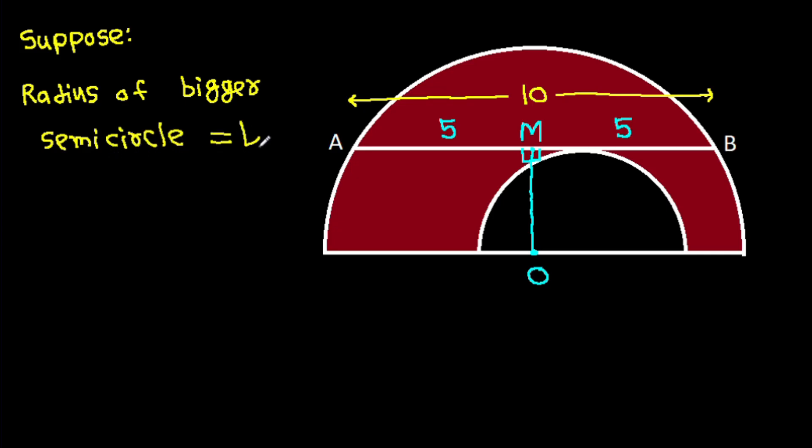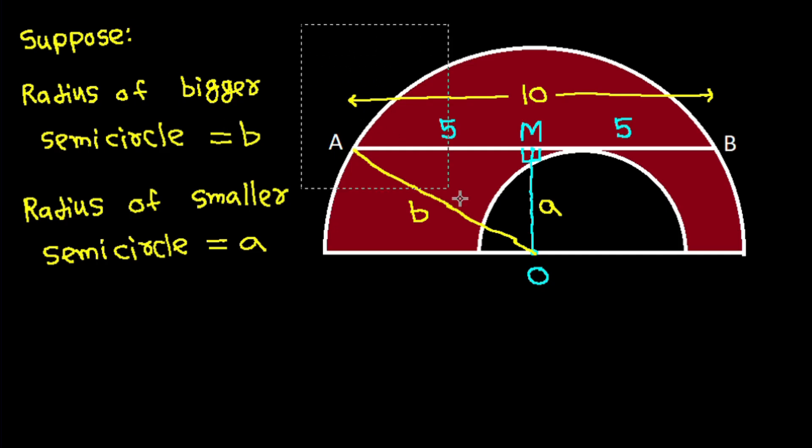The center of the smaller semicircle is B and the radius of the smaller semicircle is a. Then OA it will be b, and OM it will be a.